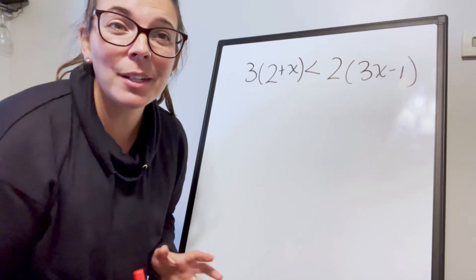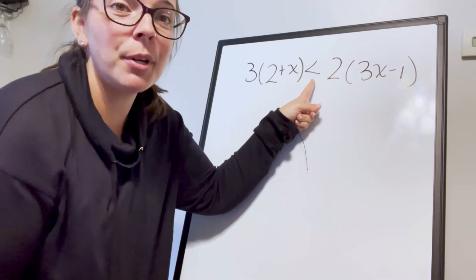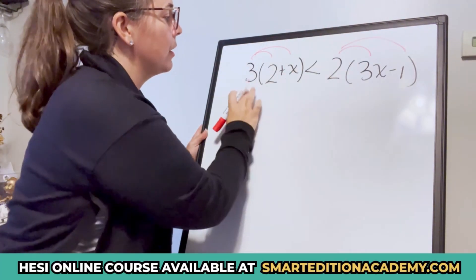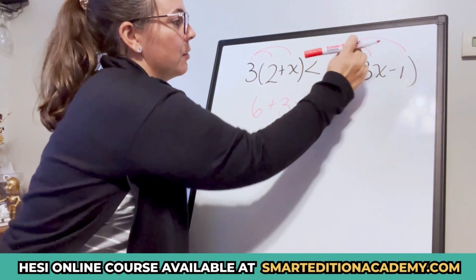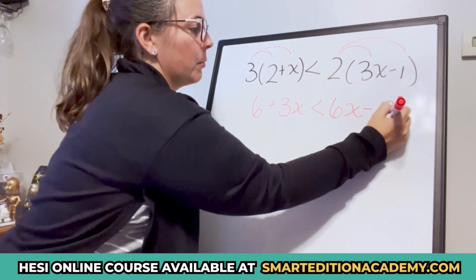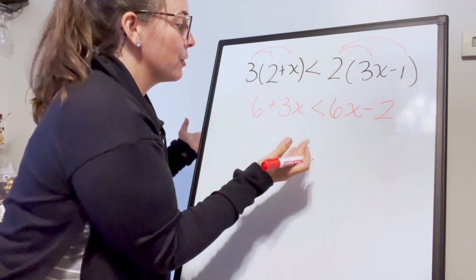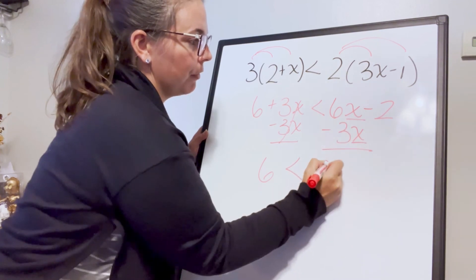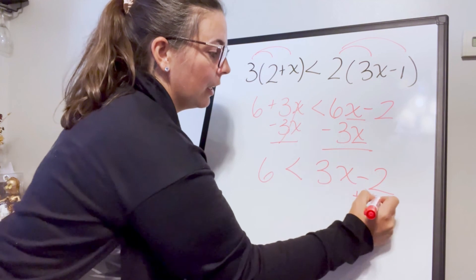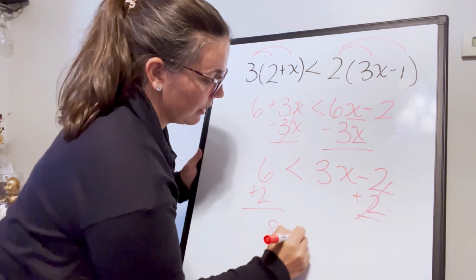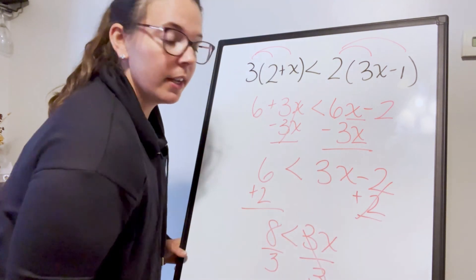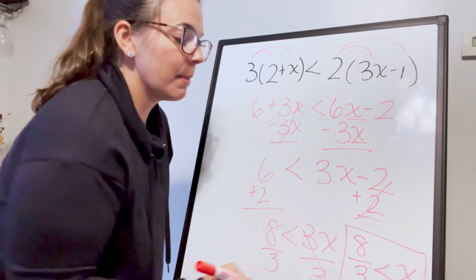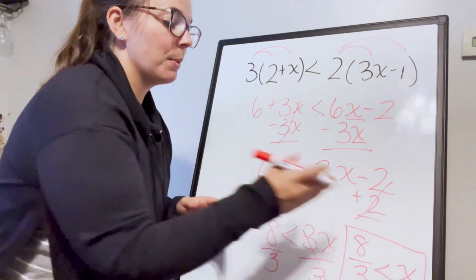For inequalities we use the same process, just keeping the inequality sign unless we multiply or divide by a negative. First, distribute on both sides: 3 times 2 is 6, 3 times x is 3x — it's less than 6x minus 2. Moving x terms to one side and adding 2 to both sides gives 8 is less than 3x. Dividing by 3: eight-thirds is less than x, or equivalently x is greater than eight-thirds.